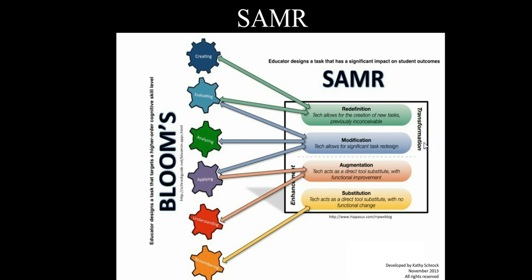Redefinition and modification are the upper levels, which are considered transformation — basically accomplishing things using the technology that you wouldn't be able to do without it. Substitution is what happens when technology is used as a substitute for a non-technology-based activity. For example, if you would normally have given students a worksheet but now you've created that worksheet as a form in Google Documents that students complete online, the teacher really hasn't changed the nature of the activity — it's just that students are now using the technology to make it happen. That's an example of substitution.